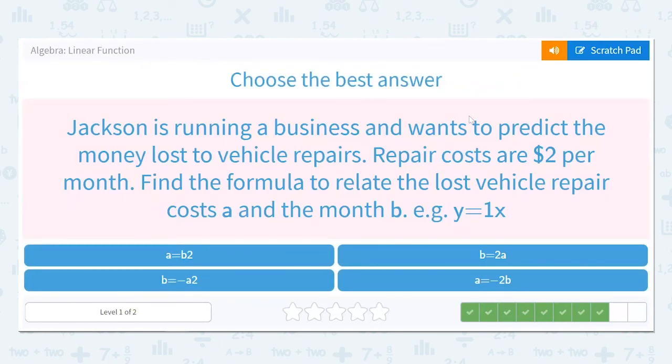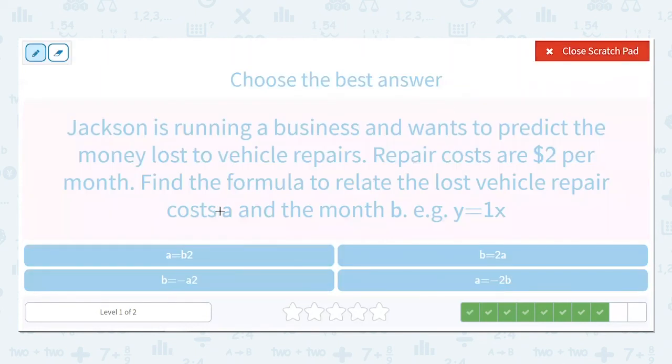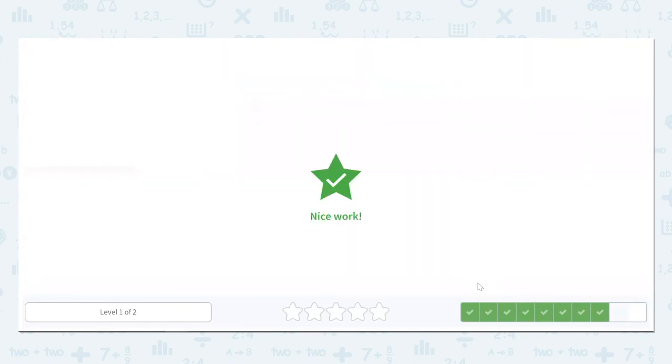Jackson is running a business and wants to predict the money lost, so we're losing again, to vehicle repairs. Repair costs are $2 per month. Find the formula to relate the lost vehicle repair cost, A, and the month, B. So the total vehicle repair loss costs are A. He's losing $2 a month. And he's going for B months. So A should equal negative 2B. And we can narrow it down because we know we're losing money. It has to be one of these negative answers. And this is not even formatted correctly with the coefficient in front. So really, that leaves you only with this. And we know that's true from what we've found.